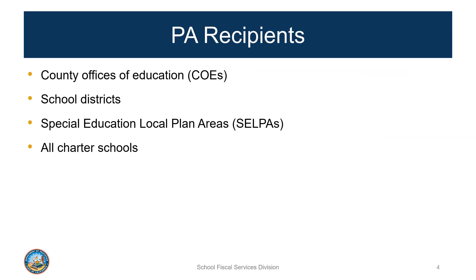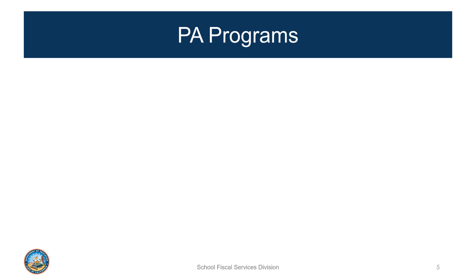The principal apportionment allocates funding to county offices of education, or COEs for short, school districts, special education local plan areas that we refer to as SELPAs, and all charter schools. Note that all charter schools are funded individually, regardless if they are deemed locally funded or directly funded for other programs.